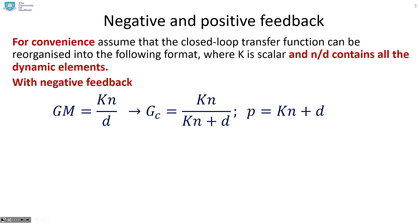What we showed in the previous video is that if you represent your system as kn over d, so that's GM equals kn over d, then with negative feedback, the closed loop pole polynomial is kn plus d.